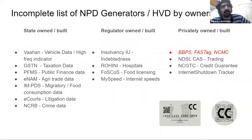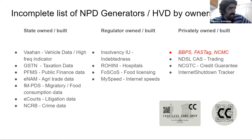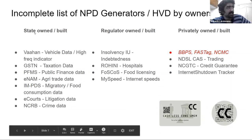Broadly, the high-value NPD-generating systems can be split by ownership. First-generation or legacy state-owned systems include: VAHAN (vehicle data), GSTN (taxation data), PFMS (public finance data), eNAM (agricultural market data), IMPDS (ration shop network — housing food consumption and migratory data), eCourts (litigation data), and NCRB (crime data). These are state-built data infrastructures with very high-value NPD datasets.